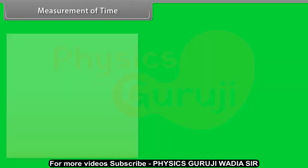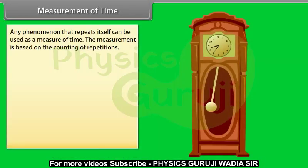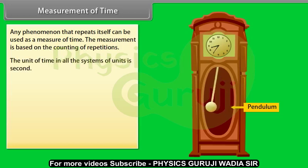Measurement of time. Any phenomenon that repeats itself can be used as a measure of time. The measurement is based on the counting of repetitions. The unit of time in all the system of units is second.